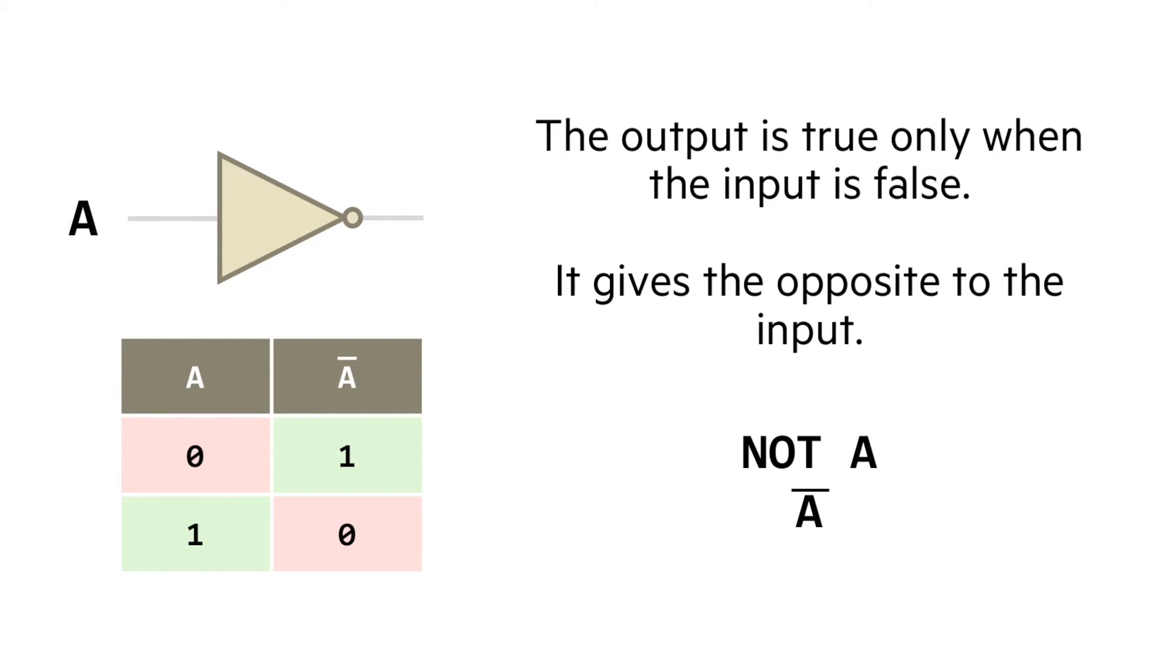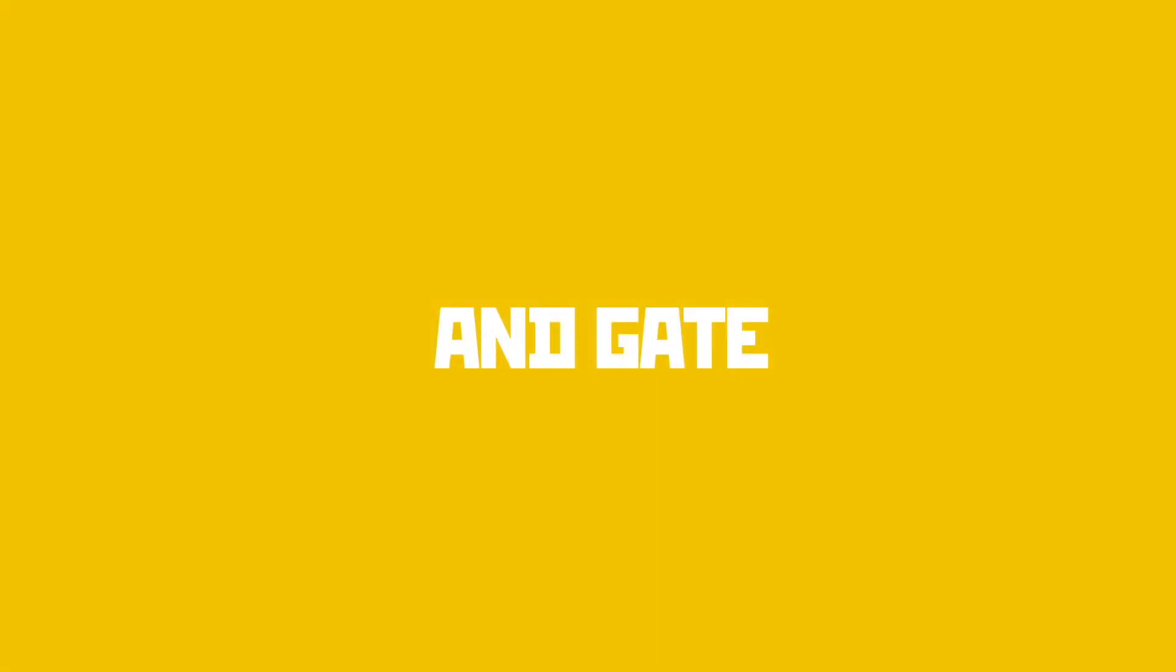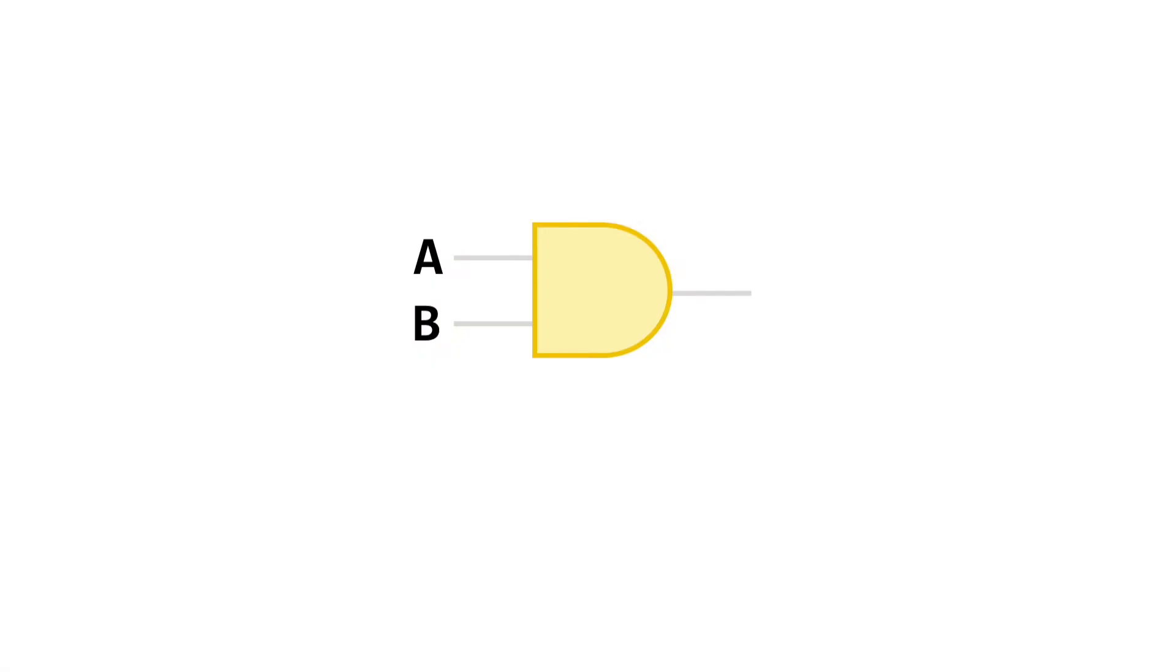This is our AND gate. You'll see first of all that this gate takes two inputs, A and B. Once again, these can be the values 1 or 0, and produces just a single output. You might be able to guess from the name of the gate that it requires both A AND B to be true in order to give a true output.